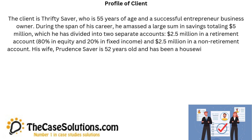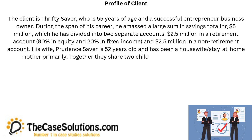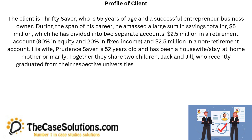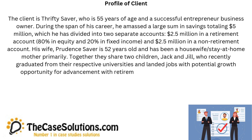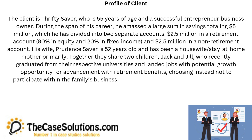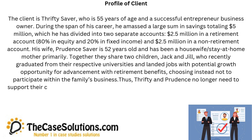His wife, Prudence Saver, is 52 years old and has been a housewife and stay-at-home mother primarily. Together they share two children, Jack and Jill, who recently graduated from their respective universities and landed jobs with potential growth opportunity and retirement benefits, choosing not to participate within the family's business. Thus, Thrifty and Prudence no longer need to support their children.